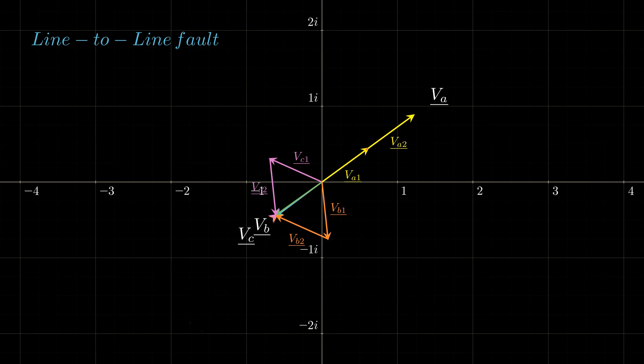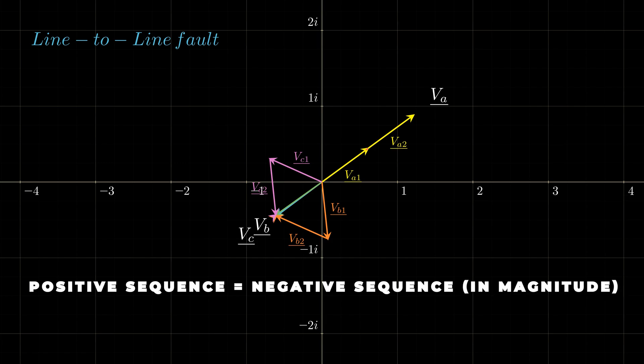Second, the positive and negative sequences are equal. This is because the negative sequence reflects the power returning to the source. In this scenario, the current in line B returns via line C, hence the equality between the two sequences.